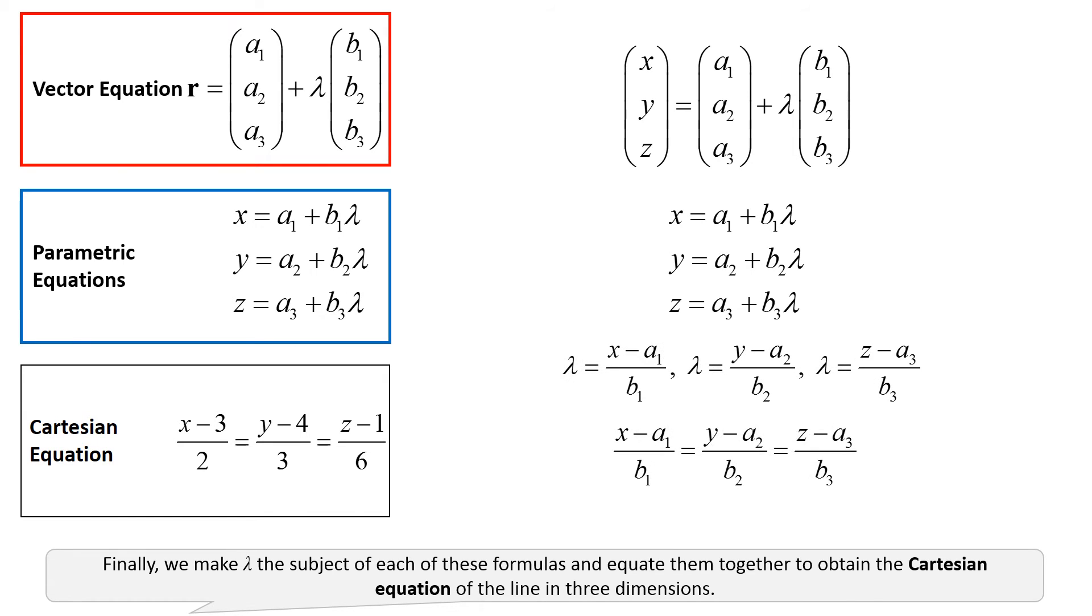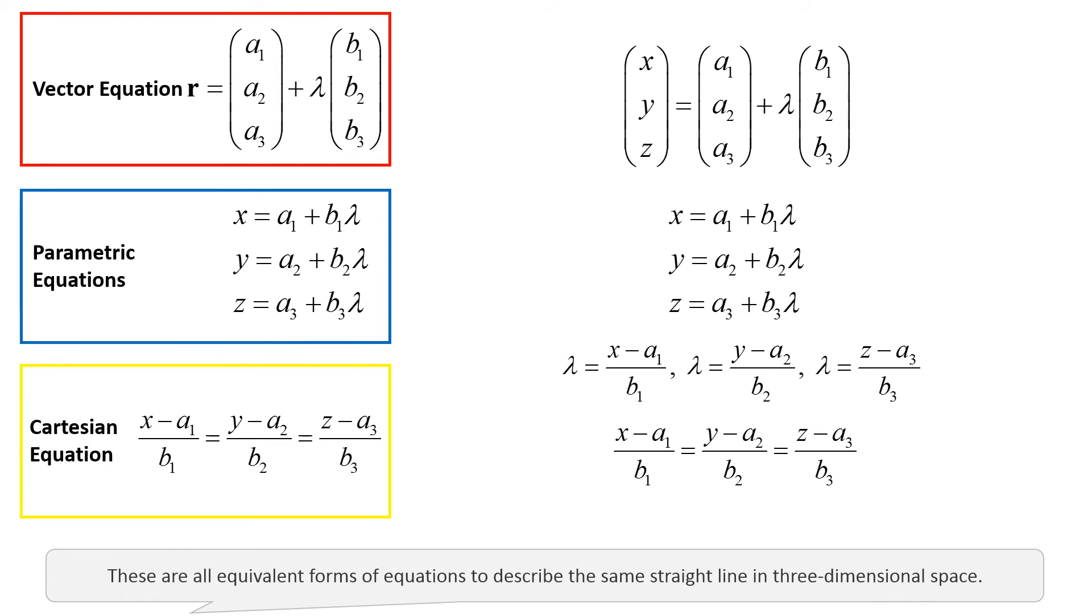Finally, we make lambda the subject of each of these formulas and equate them together to obtain the Cartesian equation of the line in three dimensions. These are all equivalent forms of equations to describe the same straight line in three-dimensional space.